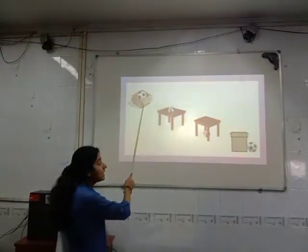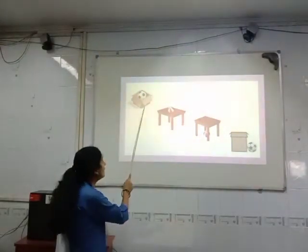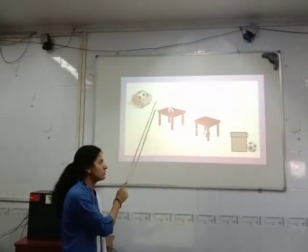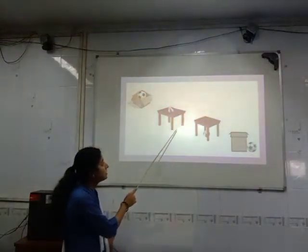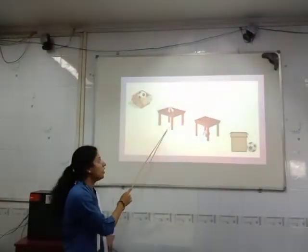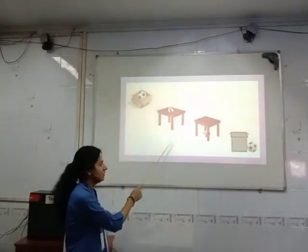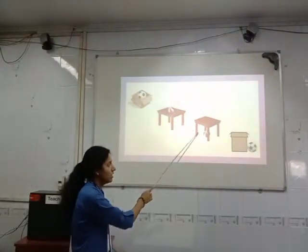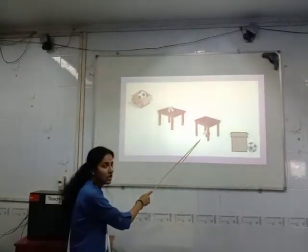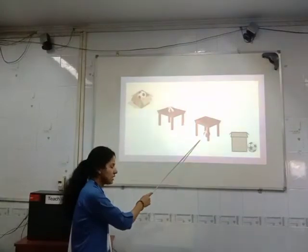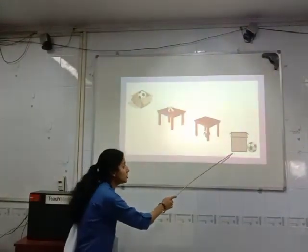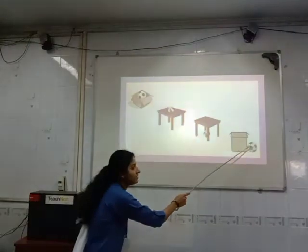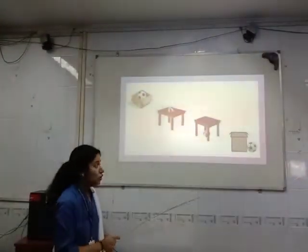In the first picture, where is the ball? A ball is inside the box. In the second picture, where is the ball? A ball is on the table. In the third picture, where is the ball? A ball is inside the table. And in the fourth picture, where is the ball? A ball is near the box.